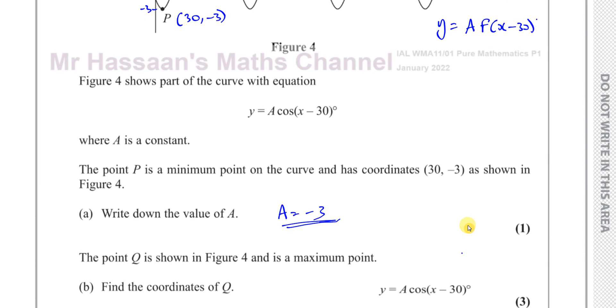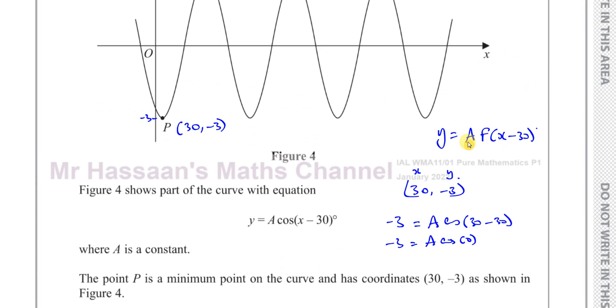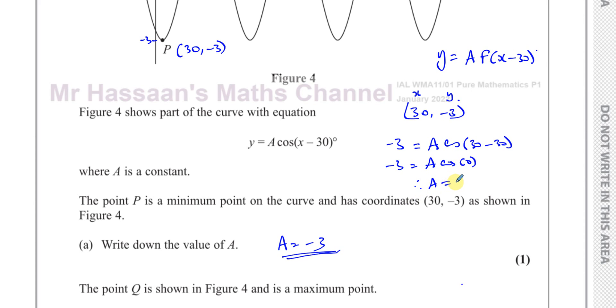We can also figure it out in another way. We can say, let's take this coordinate 30 minus 3. And we know that this is the x-coordinate, and this is the y-coordinate. Let's replace those in this formula. So you have y equals negative 3 equals a, which you have to find, times cosine of x, which is 30 minus 30. Replace the x with 30, and the y with negative 3. So you have negative 3 is equal to a times the cosine of 0 degrees, and the cosine of 0 degrees is equal to 1.